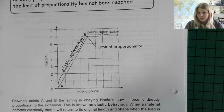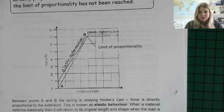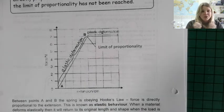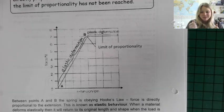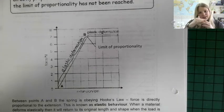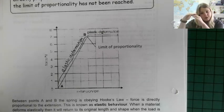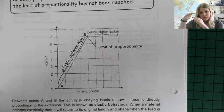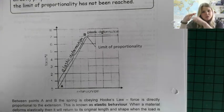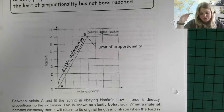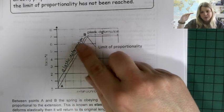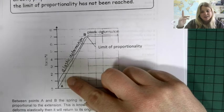This section where force is directly proportional to extension is where Hooke's Law is applying. But eventually the spring will reach a point where Hooke's Law doesn't apply anymore. If you apply a force and then remove it, the spring returns to its original position — we describe that as elastic behaviour, which is why that section of the graph is labelled 'elastic deformation.'